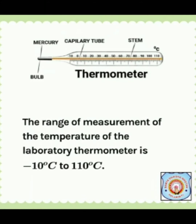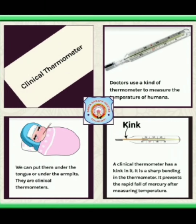The range of a laboratory thermometer for measuring temperature is minus 10 degrees centigrade to 110 degrees centigrade. The clinical thermometer is used by doctors and humans to measure body temperature. While measuring, we keep it under the tongue or under the armpits.